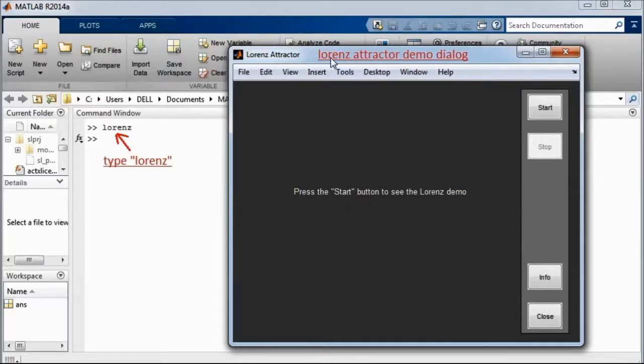This is the Lorenz attractor demo dialog where you have four options: you have start, stop, the info, and the close button. So before we press the start button, let's look at the info button and see what information it has.